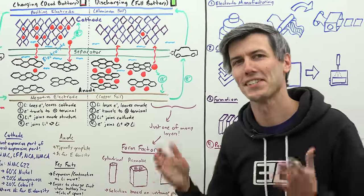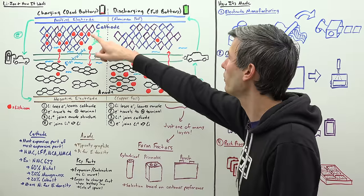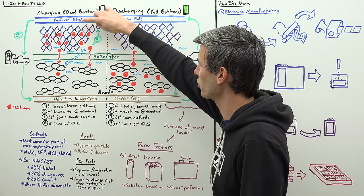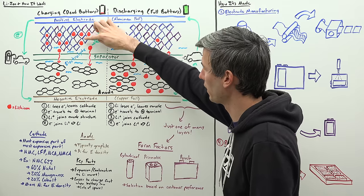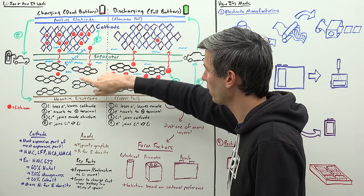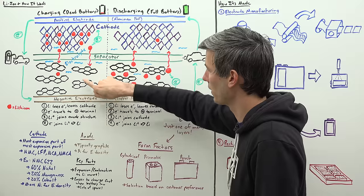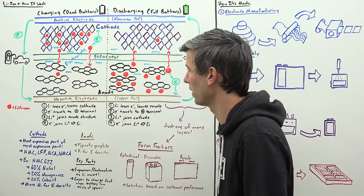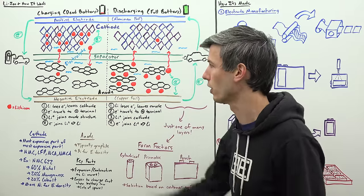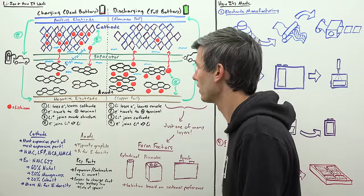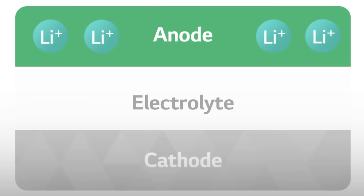Now for charging, the process is simply the opposite. You have your lithium atom, it loses an electron to the surrounding structure. That lithium ion then travels across through the separator, through this electrolyte, where it then finds a parking spot within your anode's graphite structure, and it is then rejoined by an electron. And once again, we have a happy stable lithium atom.